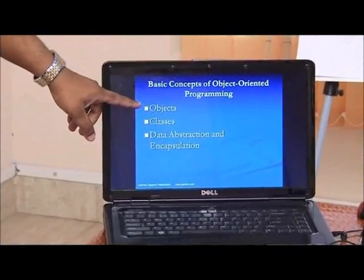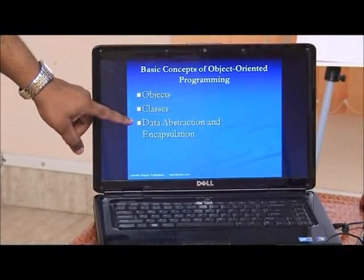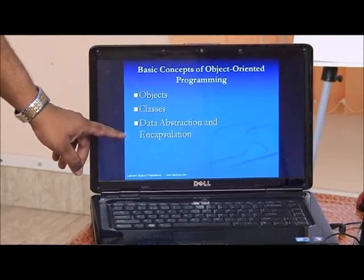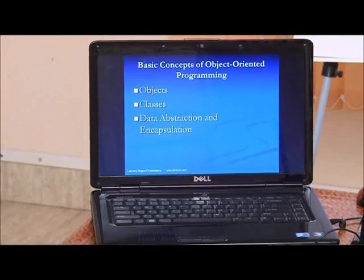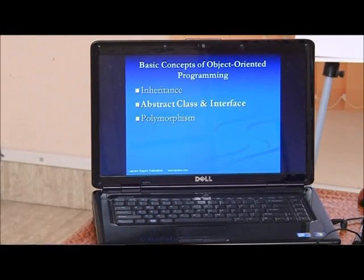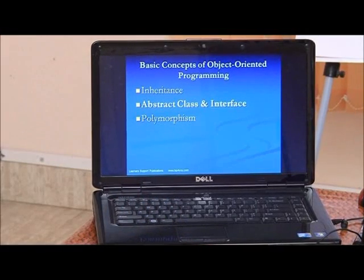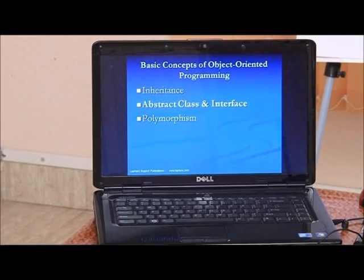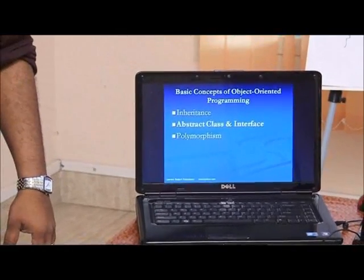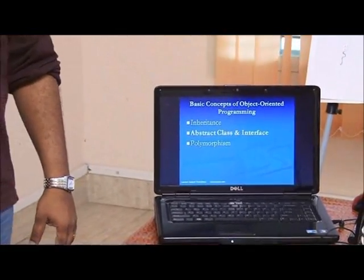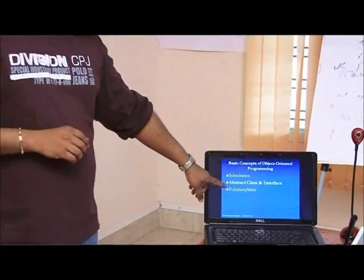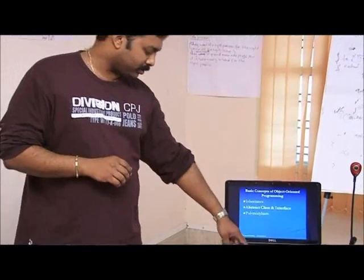We have objects, which are instances of a class, and we deal with data abstraction and encapsulation in object-oriented programming. The basic concepts we need to know when programming in an object-oriented method are inheritance, abstract classes and interfaces, and polymorphism. We will come to those one by one.